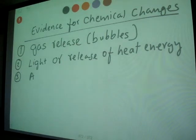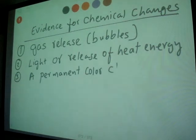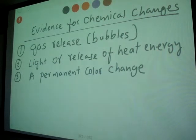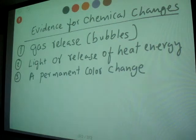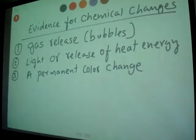A permanent color change. So these are indicators for chemical changes. When you are mixing two chemicals and there is suddenly a color change, that's where you can say there is a chemical reaction going on, there is a chemical change happening. So those are the indicators.